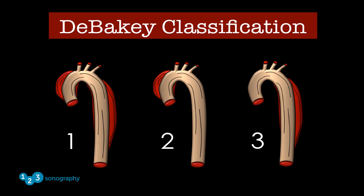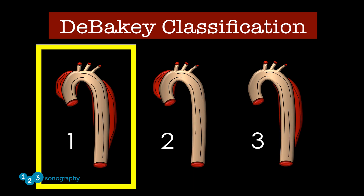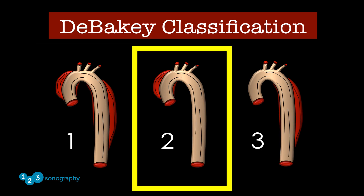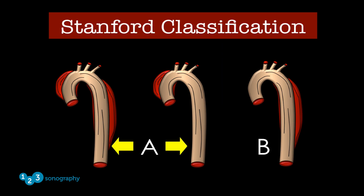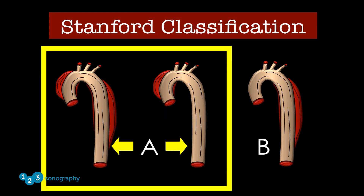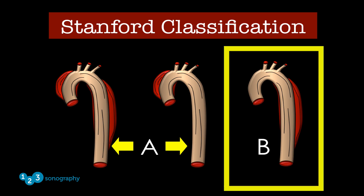There are two classification systems for aortic dissection. The older DeBakey system: Type 1 involves both ascending and descending aorta, Type 2 involves only the ascending segment and arch, and Type 3 involves only the descending segment distal to the left subclavian artery. The Stanford system, more commonly used today, classifies dissections involving the ascending aorta and/or arch as Type A, and those involving only the descending segment distal to the left subclavian artery as Type B.